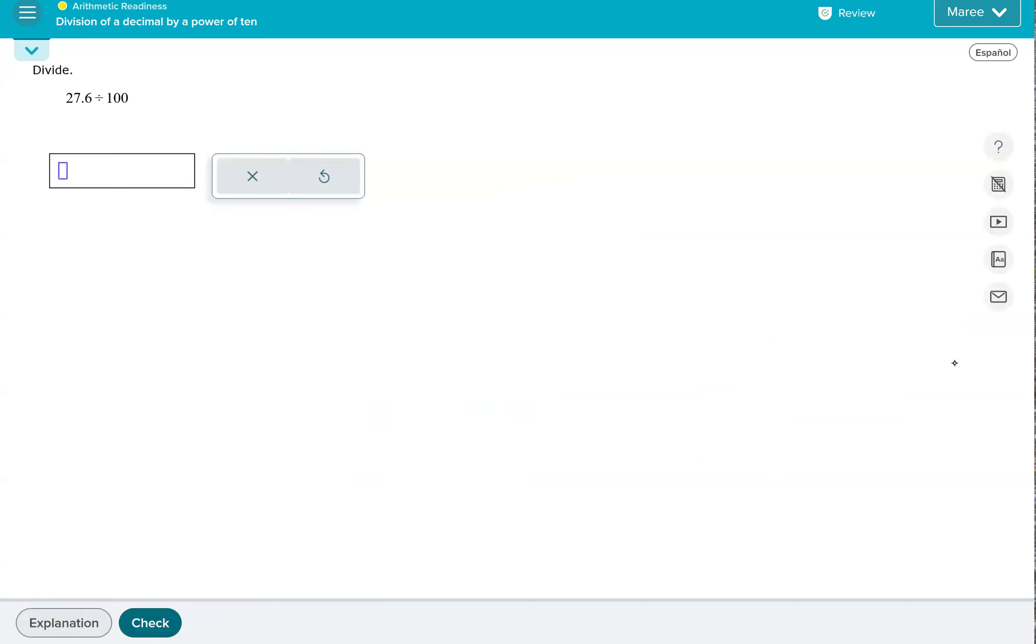Okay, so the 7 needs to go in the hundredth spot. So we're going to do 7 in the hundredth spot. So the 7 is the ones place. The hundredth spot, here's our decimal, is right here. So that's where our 7 needs to go. And then we put our other numbers in. There we go. So it's 0.276 is our answer. And I'll show you what it looks like.